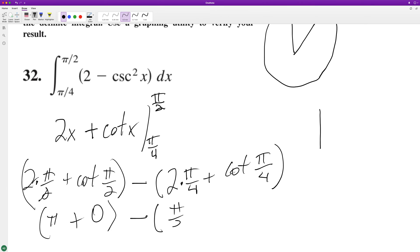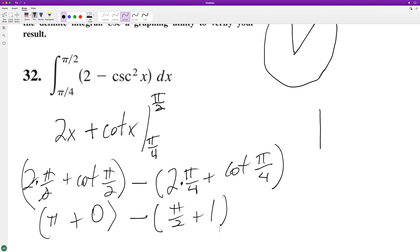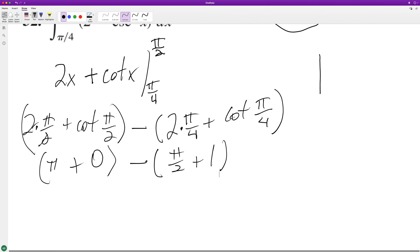At pi over two, this will be one. So we end up with pi minus pi over two minus one, distributing the minus sign here. So we end up with pi over two minus one, and you can just leave it like that. You can make a common denominator, but this will work out.